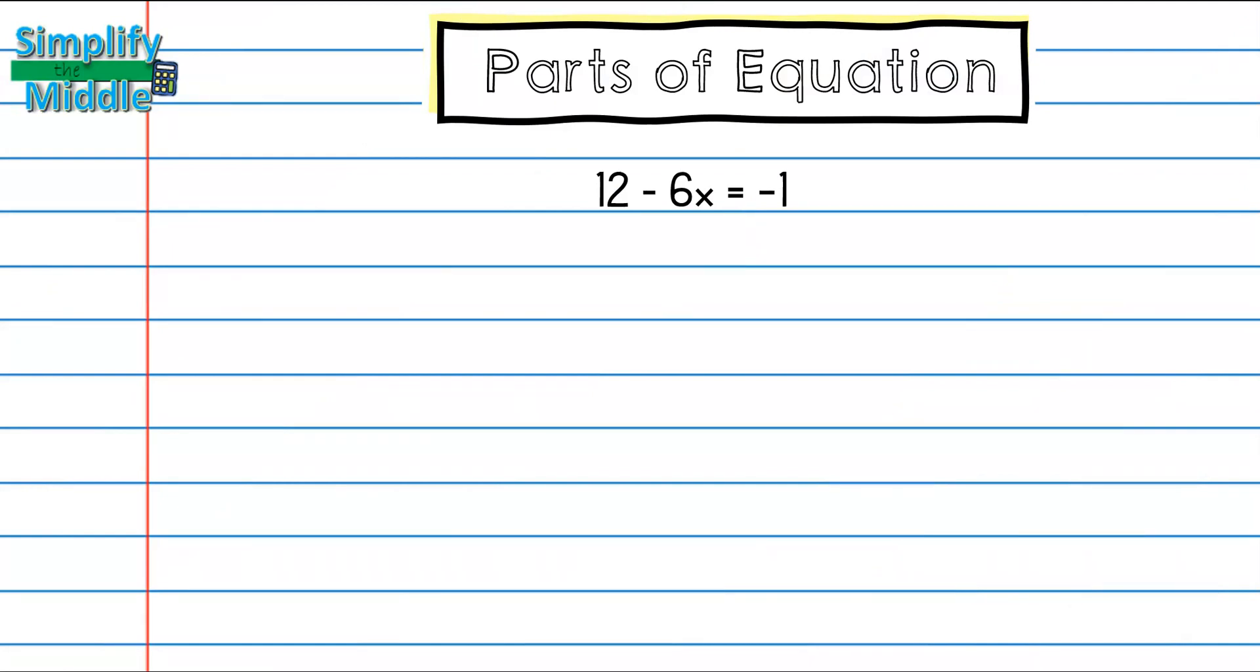Next, we'll look at some examples that use the subtraction sign, and we'll see how that's a little different. For my variable in this problem, I have x, and for my coefficient, I have 6, but I notice that there's a subtraction sign here.